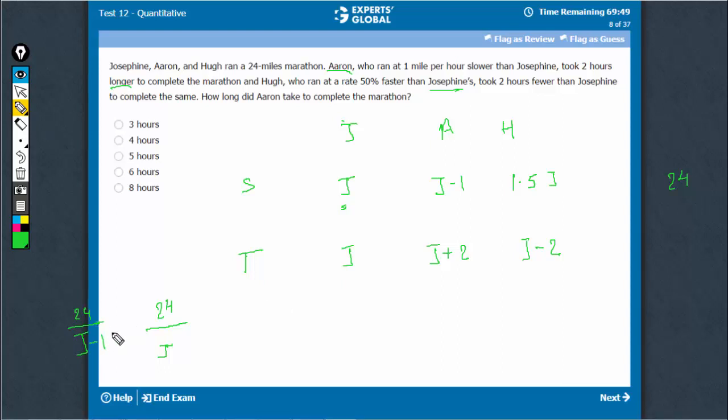So this is the respective time taken. This is the time taken by A, this is the time taken by J, and the difference in the time taken is 2 hours, right? He took J hours and he took J plus 2 hours. The difference is 2.